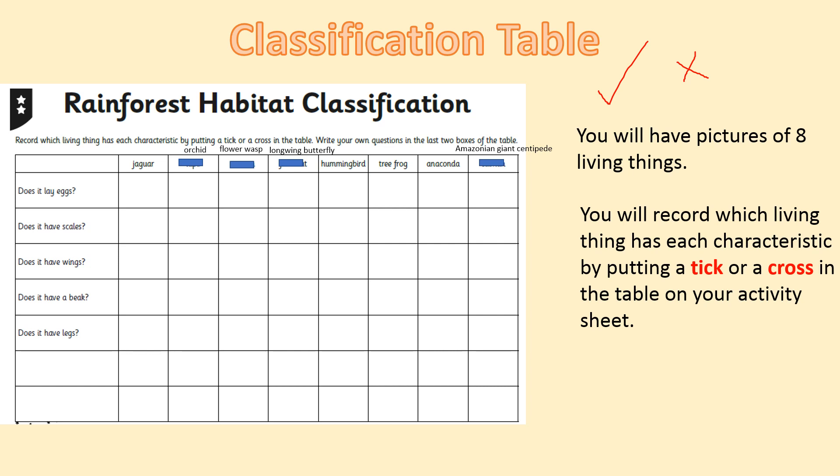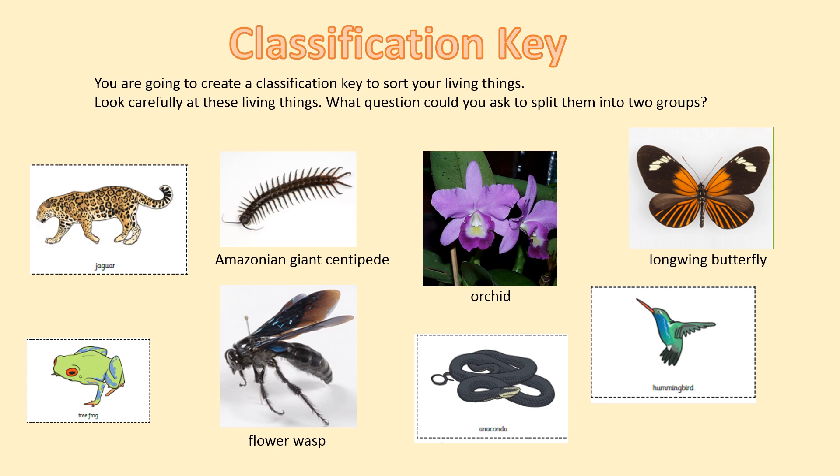Let's move on. At the end you can come up with your own questions. In the question where it asks does it have wings, which animal has wings? It would be the flower wasp, the hummingbird, and the long-winged butterfly — so you would put a tick next to those animals and a cross for the rest. For some questions, like lays eggs, you can't physically see it in the picture — that's when you need to go through your notes and see what type of animals lay eggs. Vertebrates or invertebrates?